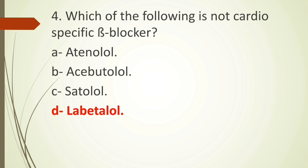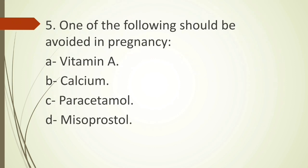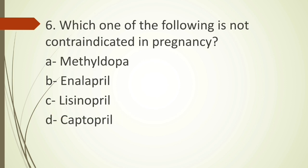Fifth question: one of the following should be avoided in pregnancy — option A vitamin A, option B calcium, option C paracetamol, option D misoprostol. Calcium and vitamins can be given in pregnancy without contraindication, and paracetamol is a commonly used analgesic that is safe in pregnancy. The correct answer is option D, misoprostol, because it is a prostaglandin analog that causes uterine contraction and can lead to abortion.